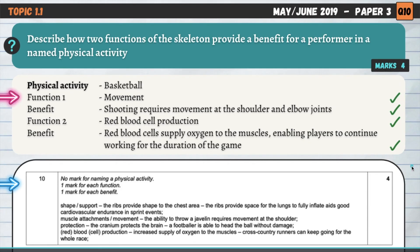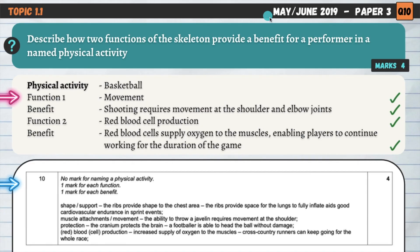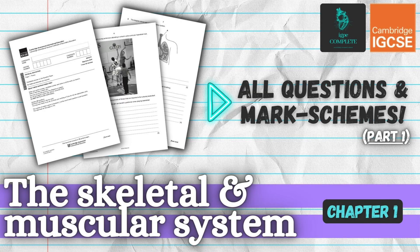That's it for today's session. All of the questions today were from the May-June series in 2019 where there were three exam papers — every single question for chapter one on the skeletal and muscular system from those three papers. I hope you found this lesson useful and I will see you in the next one.